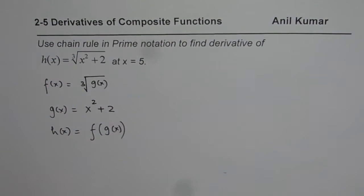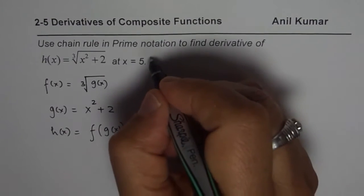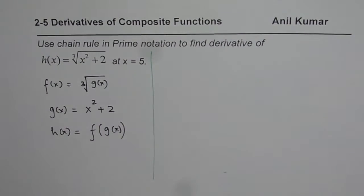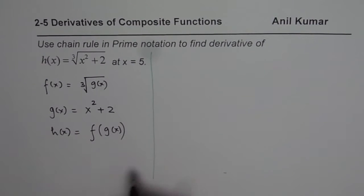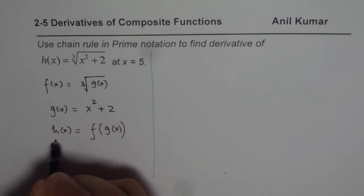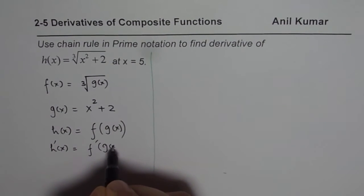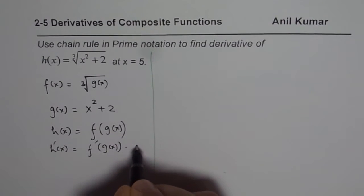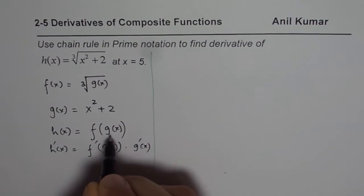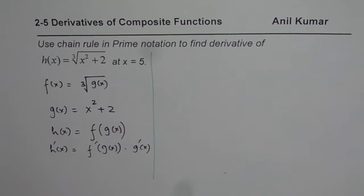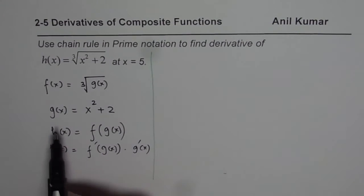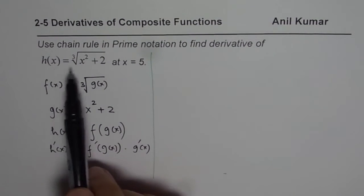That is how you form a composition of a function. I hope you understand how to write a function as a composite function. Now we will understand how to find the derivative. The derivative of a composite function will be the derivative of the outside function evaluated at g(x), times the derivative of the inside function.